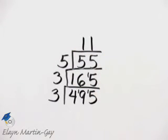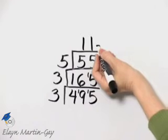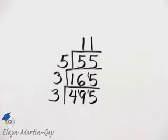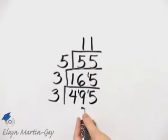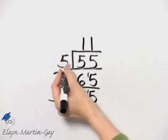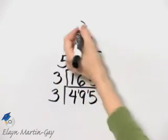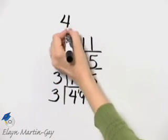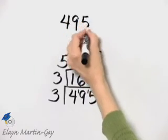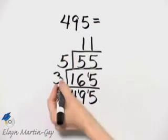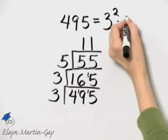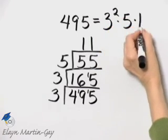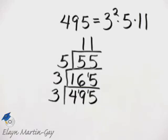You continue this process until the quotient is itself a prime number. Because this quotient is a prime number, I know four hundred ninety-five is three times three times five times eleven. Or I can say that four hundred ninety-five is three squared times five times eleven. And you can check by multiplying.